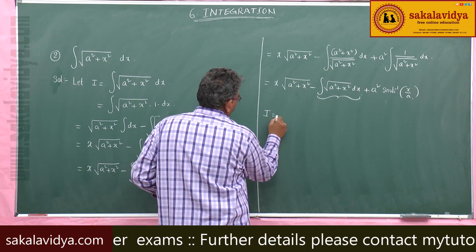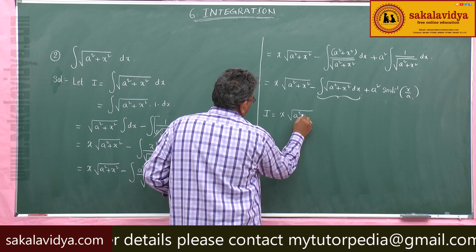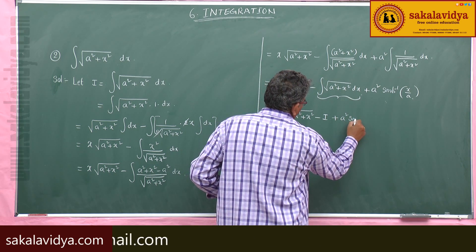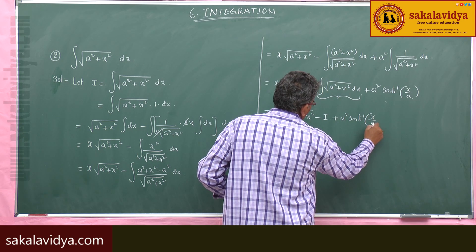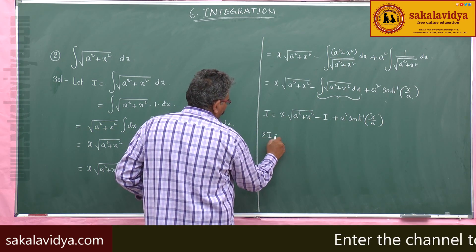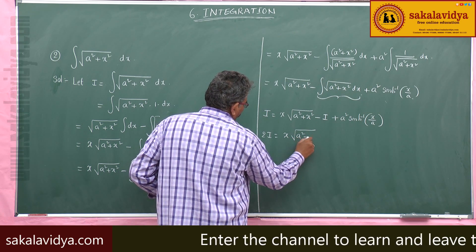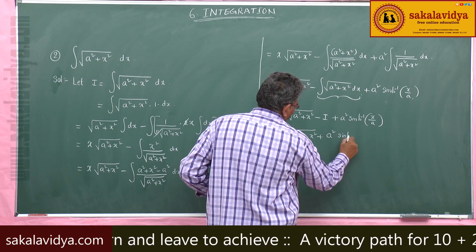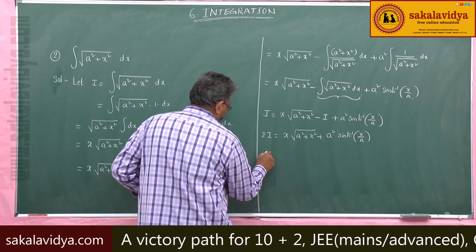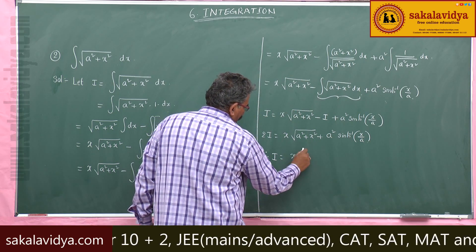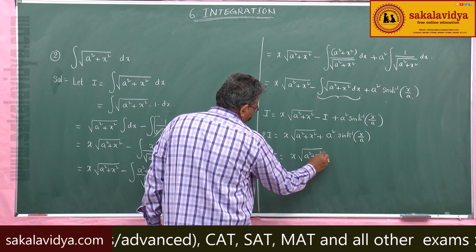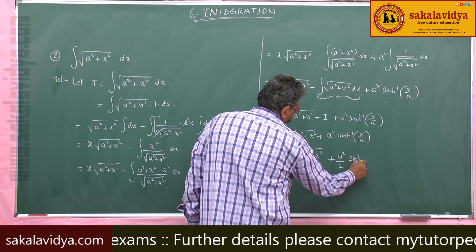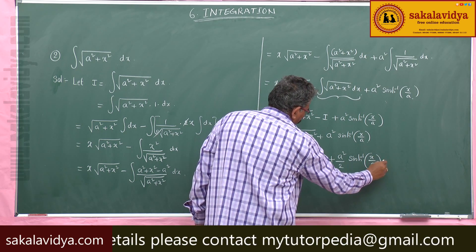So, i = x·√(a²+x²) − i + a²·sinh⁻¹(x/a). Bringing i to the left: 2i = x·√(a²+x²) + a²·sinh⁻¹(x/a). Therefore, i = (x/2)·√(a²+x²) + (a²/2)·sinh⁻¹(x/a) + C.